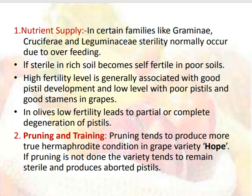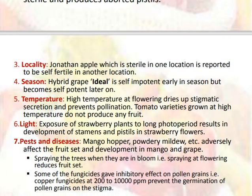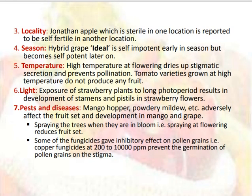Pruning tends to produce more true hermaphrodite conditions in grape varieties; if pruning is not done, the variety tends to remain sterile and produces aborted pistils. Locality: Jonathan apple, which is sterile in one location, is reported to be self-fertile in another location. Season: hybrid grape Ideal is self-impotent early in the season but becomes self-potent later on. Temperature: high temperature at flowering dries up the stigmatic secretion and prevents pollination; tomato grown at high temperature does not produce any fruits. Light: exposure of strawberry plants to long photoperiod results in development of stamens and pistils in strawberry flowers. Pests and diseases: mango hopper, powdery mildew, etc. adversely affect fruit set and development in mango and grapes. Spraying trees when in bloom reduces fruit set; some fungicides have an inhibitory effect on pollen grains, and copper fungicides at 200–10,000 ppm prevent germination of pollen grains on the stigma.